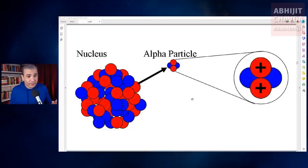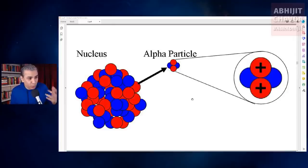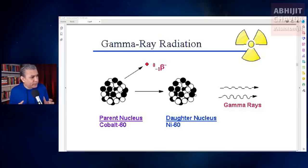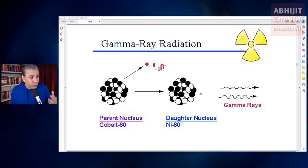Alpha rays consist of alpha particles. An alpha particle is made up of two protons and two neutrons — it is basically a helium nucleus. Beta rays are electrons, and gamma rays are extremely dangerous to human beings and living beings — gamma rays are very high energy photons.